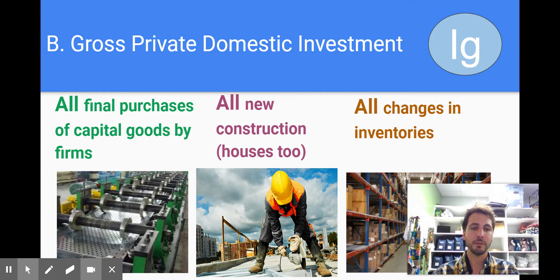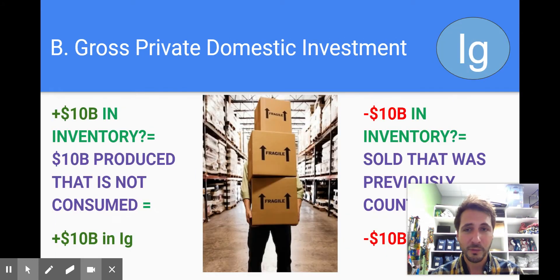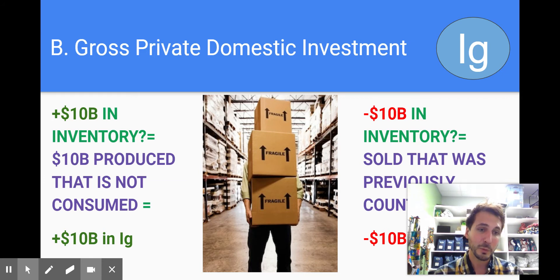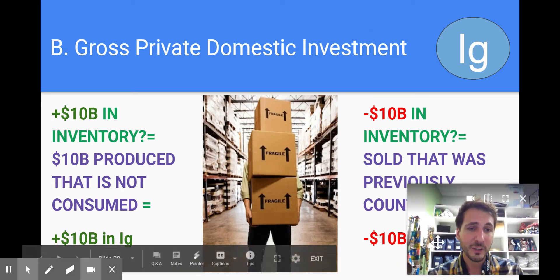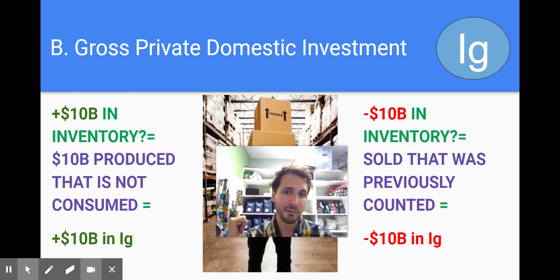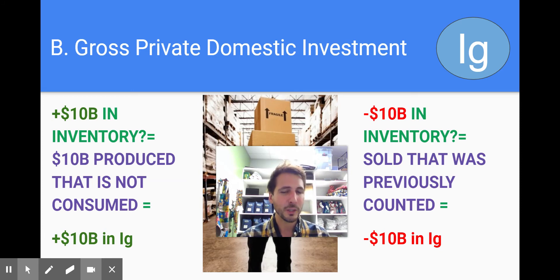All changes in inventories are considered investment. If I have an increase in inventory, it means I produced more than I sold — that's an investment for next year. If I have a decrease in inventory, it means I sold more than I produced, and that's going to be negative on investment. For example, if we have plus $10 billion in inventory, that means $10 billion was produced but not consumed. GDP counts everything produced, so investment goes up by $10 billion. If next year I sell that inventory, investment goes down $10 billion because I don't want to count it twice.